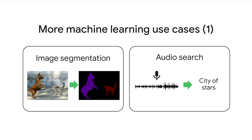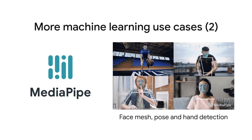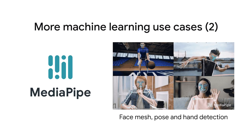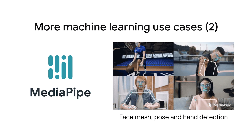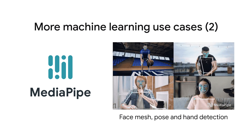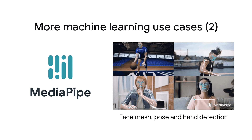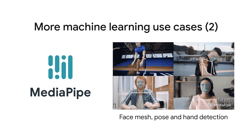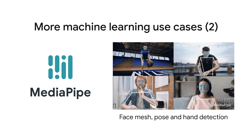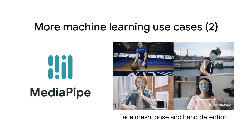Now we have learned how to do object detection and audio classification. The Task Library supports many more machine learning tasks, such as image segmentation or audio search. For example, you can feed a model a piece of music and it will tell you which song it is. Besides the TensorFlow Lite task library, you may also want to check out MediaPipe. It's a library that builds on top of TensorFlow Lite and provides easy-to-use APIs for many more use cases, such as combined face mesh, pose, and hand detection. Please check out the links in the video description to learn more.